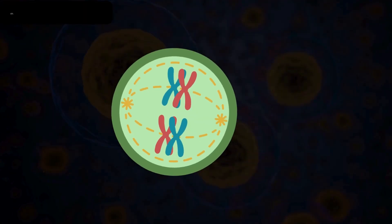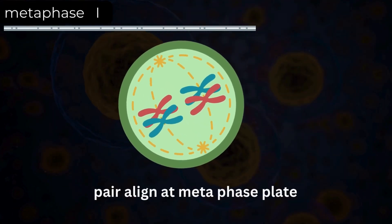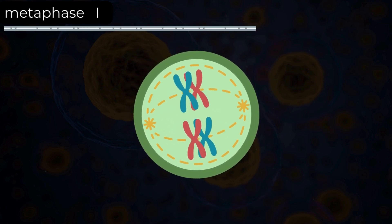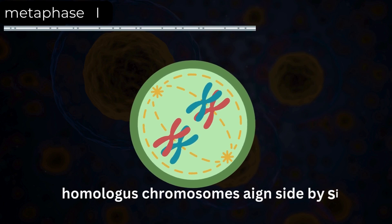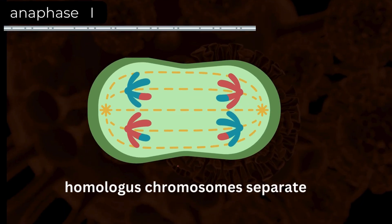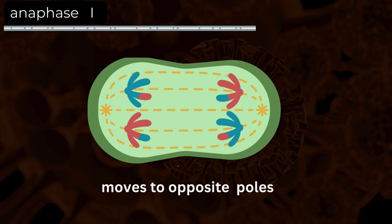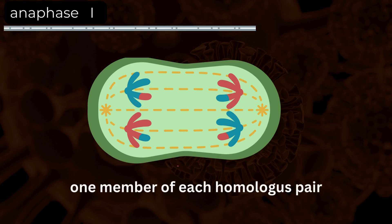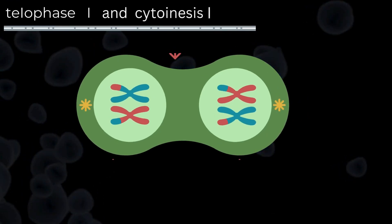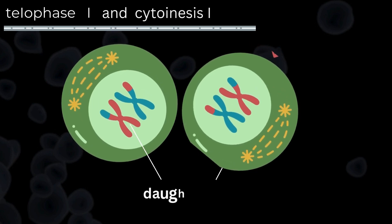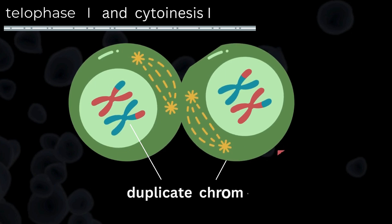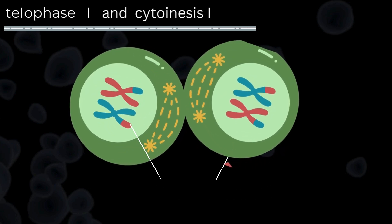Now back to meiosis. During Metaphase 1, homologous chromosomes align at the metaphase plate, connected to spindle fibers at their centromere. Unlike mitosis where chromosomes align individually, homologous pairs align side by side during Metaphase 1. Anaphase 1 follows, where homologous chromosomes separate and move to opposite poles of the cell, pulled by spindle fibers attached to the centromere. This separation ensures that each resulting cell receives only one member of each homologous pair. Telophase 1 and Cytokinesis 1 complete the first division of meiosis, resulting in two haploid daughter cells, each containing half the original chromosome number but consisting of duplicate chromatids.